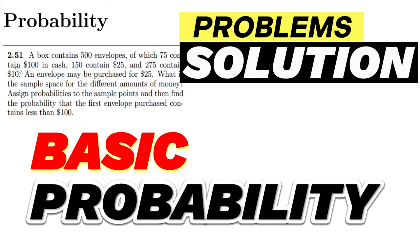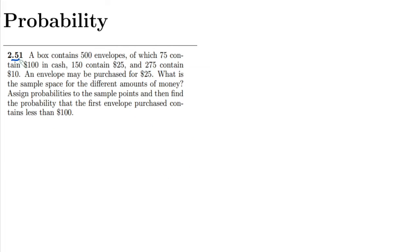Hello guys, so this is question 2.51. The statement here is that a box contains 500 envelopes, of which 75 contain $100 in cash, 150 contain $25 cash, and 275 contain $10. An envelope may be purchased for $25. What is the sample space for the different amounts of money?